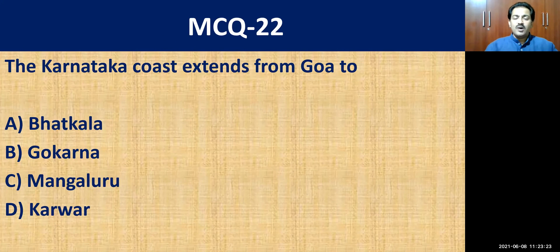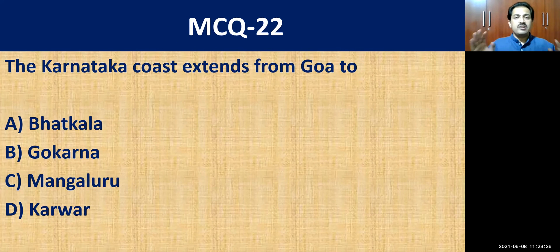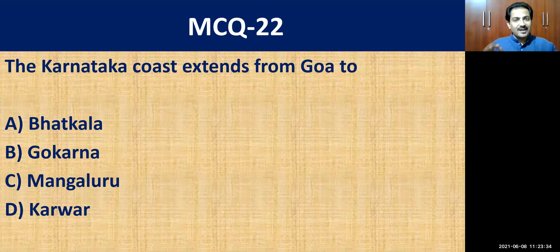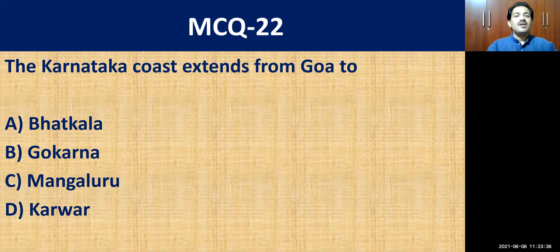The last MCQ, question number twenty-two: the Karnataka coast extends from Goa to? The options are Bhatkal, Gokarna, Mangaluru, or Karwar. The correct answer is Mangaluru.